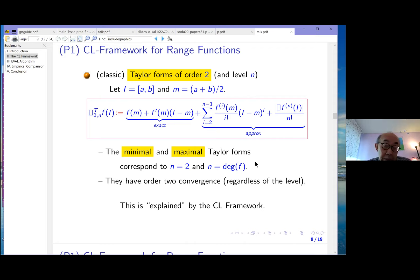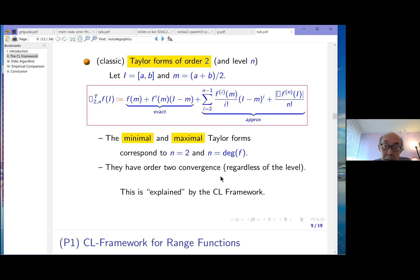This is what we call level n order 2 Taylor form. Maximal and minimal simply means n equals 2, which means we basically don't have this term and only have this interval evaluation in the minimal case. In the maximal case, if F is a polynomial of degree n, then this becomes a constant. So you only have these terms and not this interval evaluation. They both have order 2 convergence regardless of the level. But what the previous tables showed concerning the minimal and maximal is that order convergence is not the only story. Each of these extra terms is converging to zero with higher and higher order. This approximate part is going to zero extremely fast in the maximal case. This is very important in practice and is exactly what is explained by the CL framework.